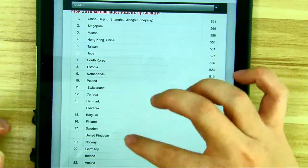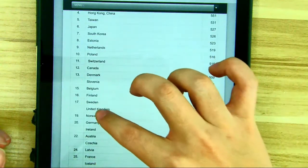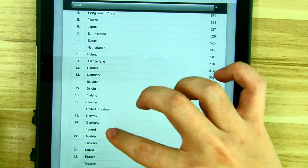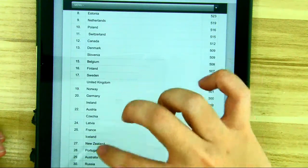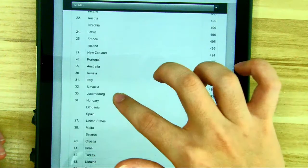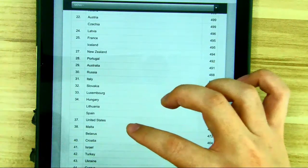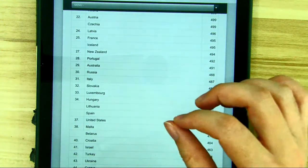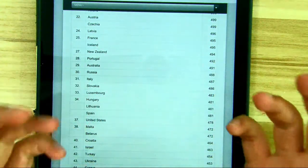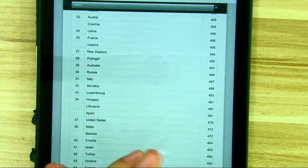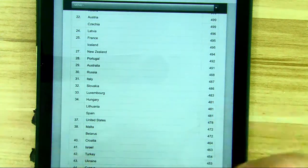And we can scroll down and see the UK is in the 17th place, 20th is Germany, 25th France, and the US is in the 37th. So it seems that the saying could be true. Asians are better in math. Let's draw some conclusions afterwards.